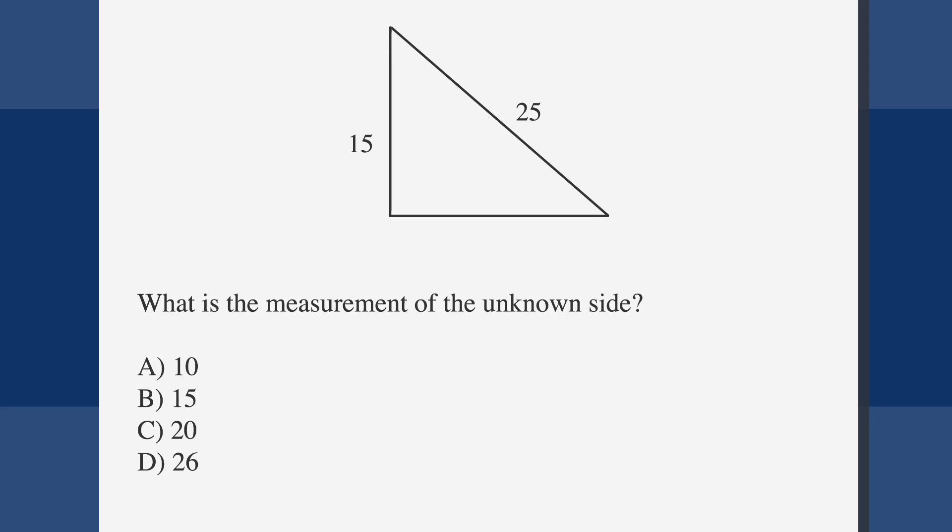What is the measurement of the unknown side? Our answer choices are A 10, B 15, C 20, and D 26. The picture tells us that the hypotenuse, or the longest side of the triangle, is 25 and that one of the legs is 15. So, we need to find the third side of this triangle, X.